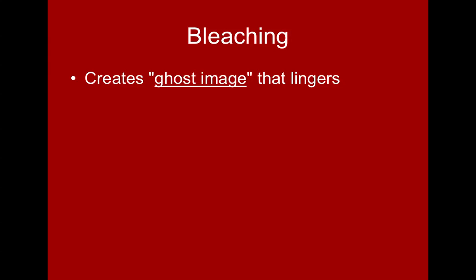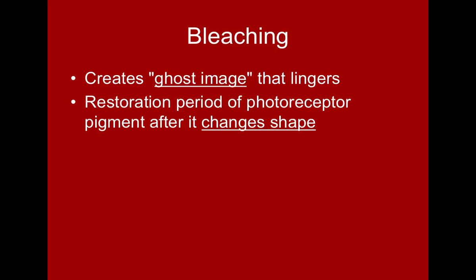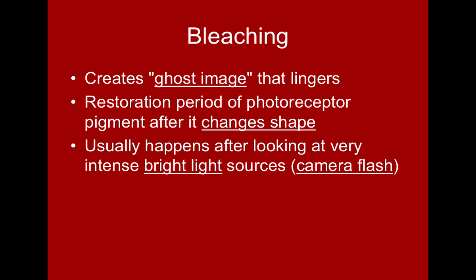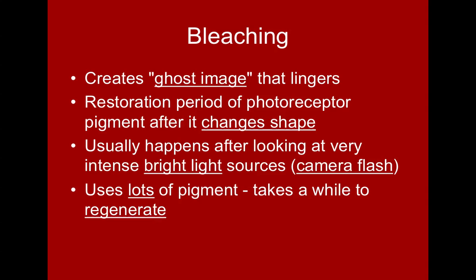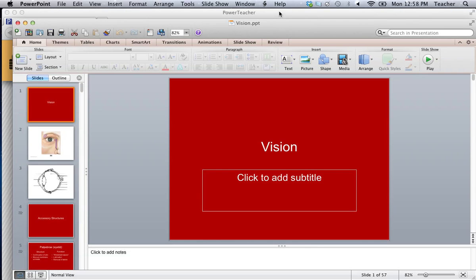Bleaching is what creates a ghost image after you look at something intense, like a bright flash. After the photoreceptor pigment has changed shape, it needs time to change back. When you look at a very intense bright light source like a camera flash, a lot of opsin protein changes shape at once. It takes time for the opsin to return to its normal form so it can be stimulated again — until then, you see that ghost image following your eyes around. That concludes our look at vision.